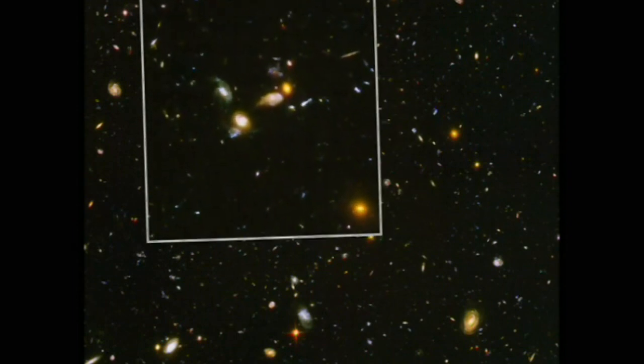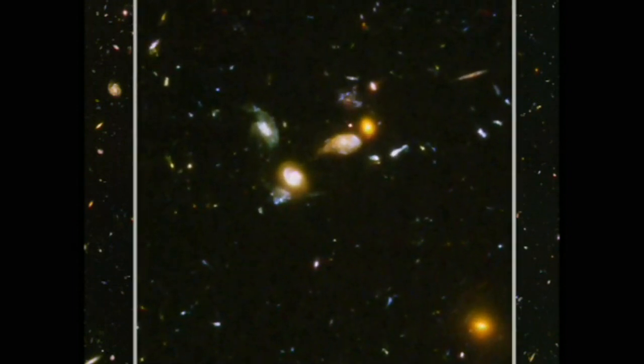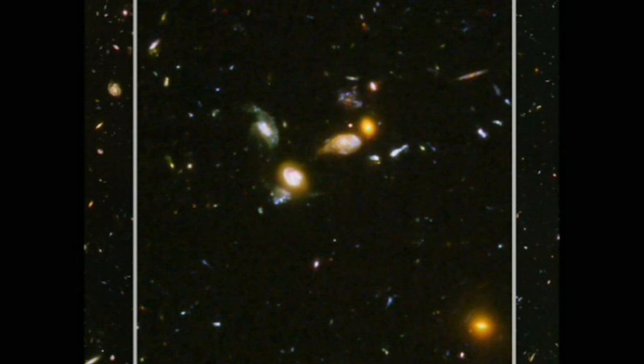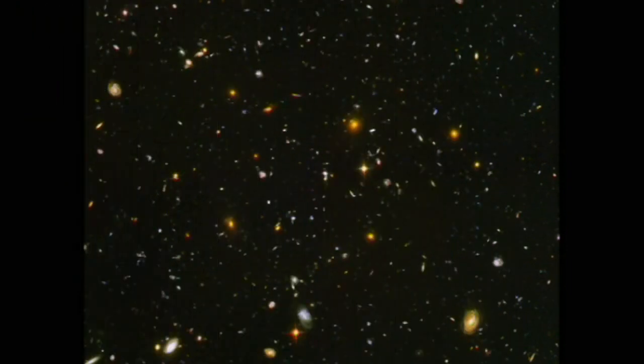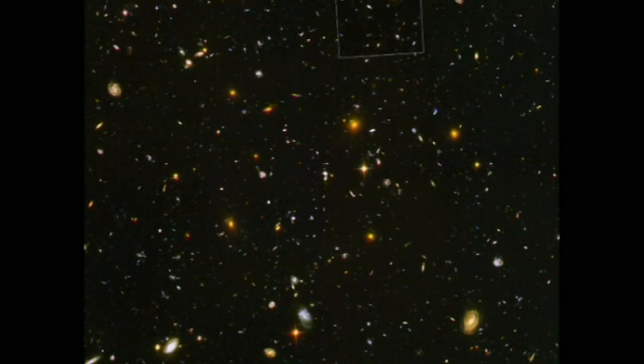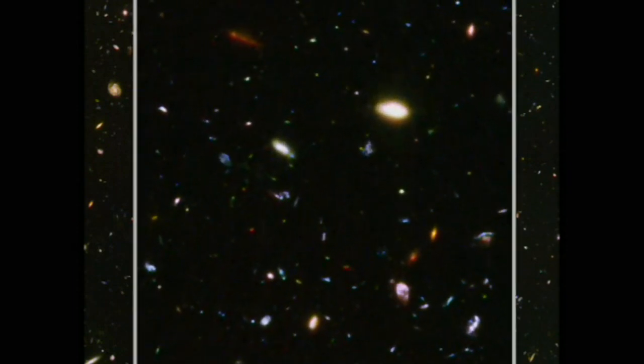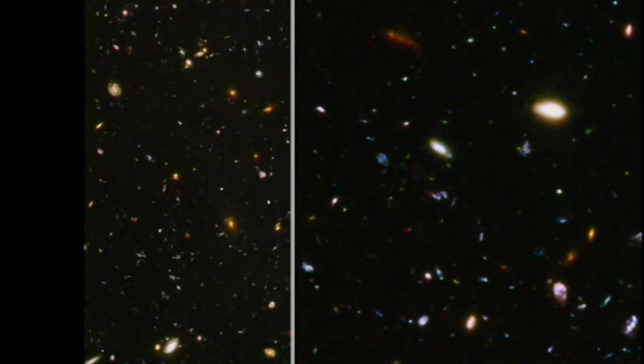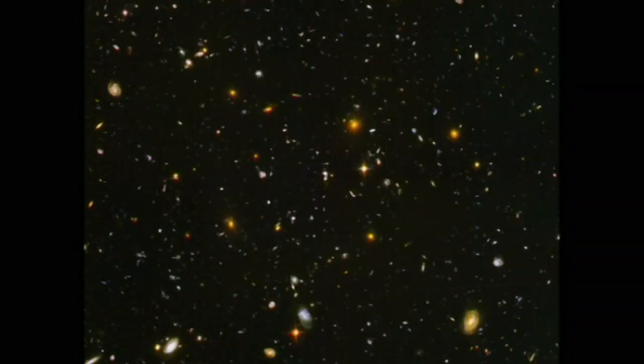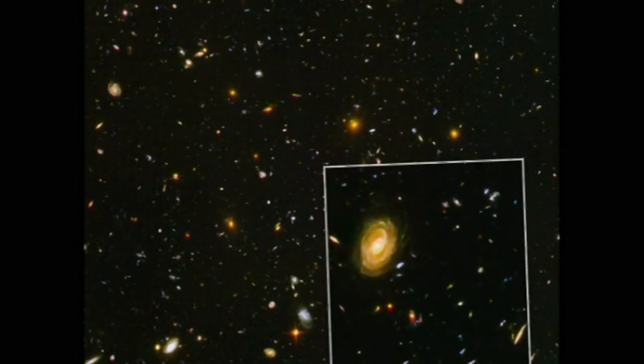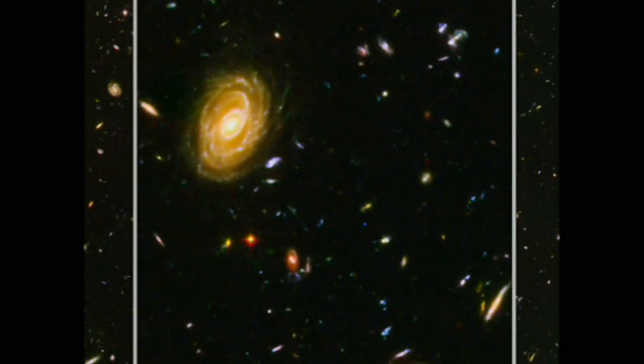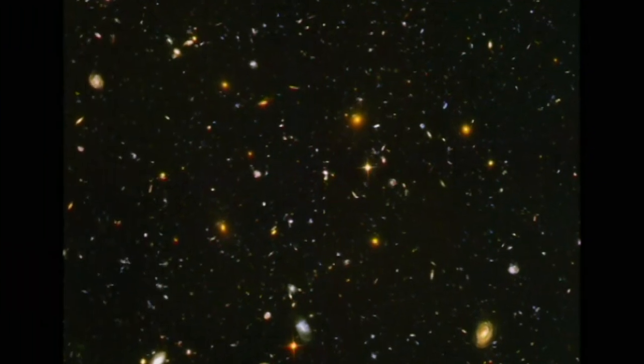In vibrant contrast to the image's rich harvest of classic spiral and elliptical galaxies, there is also a zoo of oddball galaxies littering the field. Some look like toothpicks, others like links on a bracelet. A few appear to be interacting with each other. Their strange shapes are a far cry from the majestic spiral and elliptical galaxies we see today. These oddball galaxies chronicle a period when the universe was more chaotic, when order and structure were just beginning to emerge.